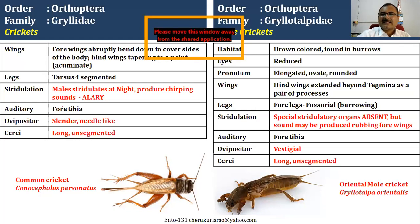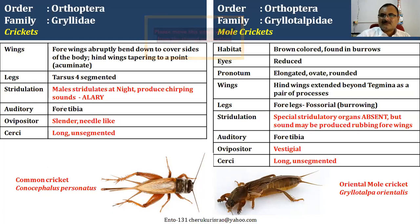The second family is Gryllotalpidae — the mole crickets. They are very commonly visible in most places. They actually dig and live inside the soil.